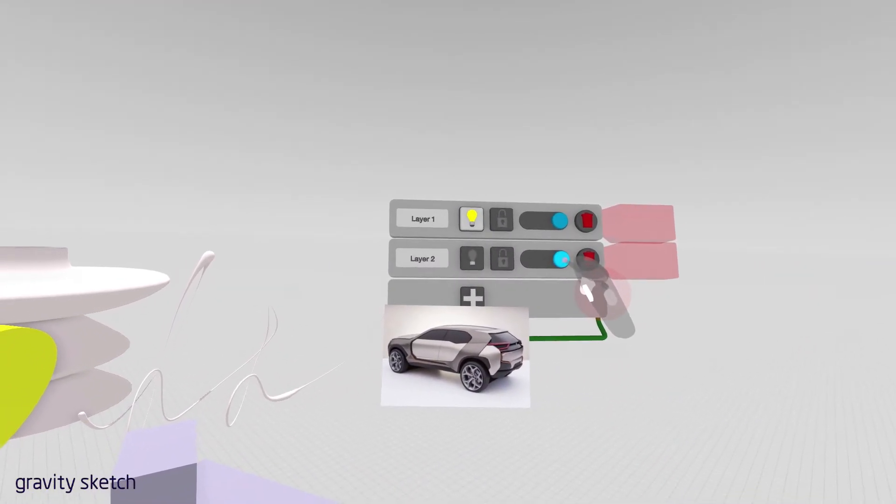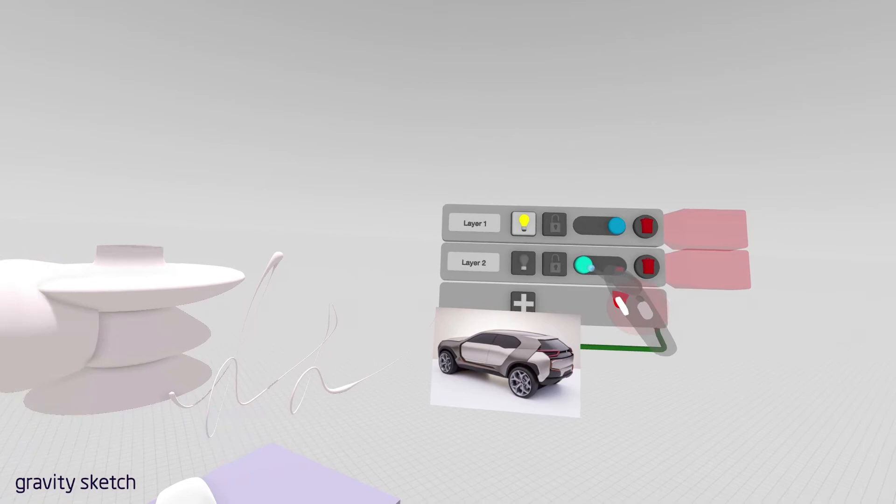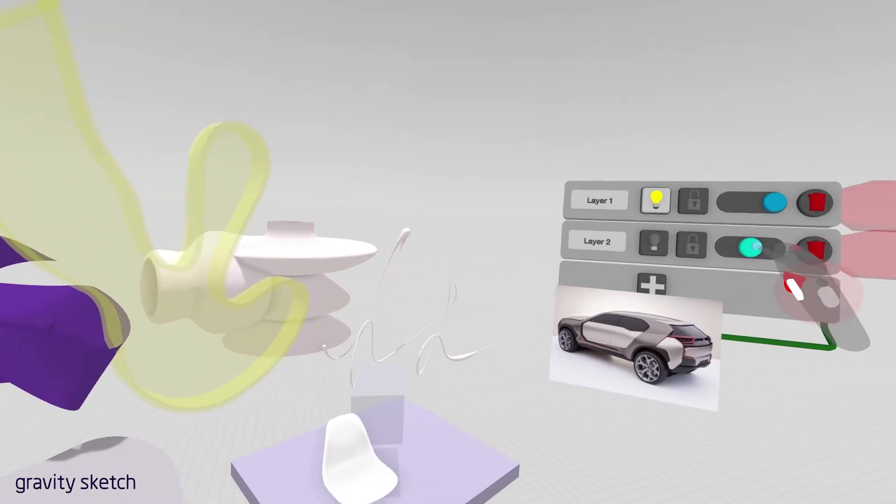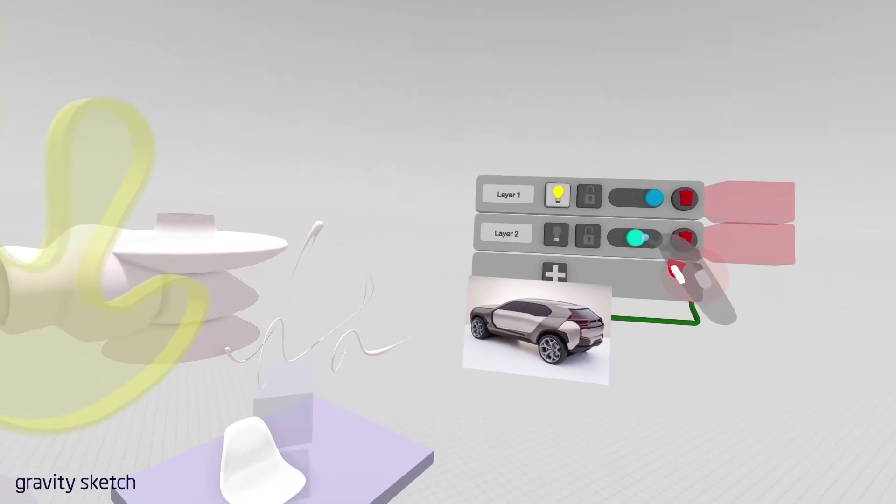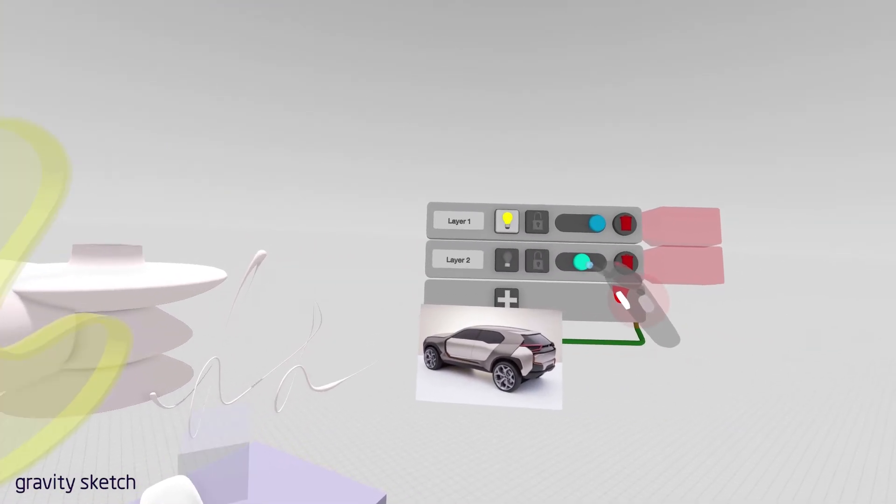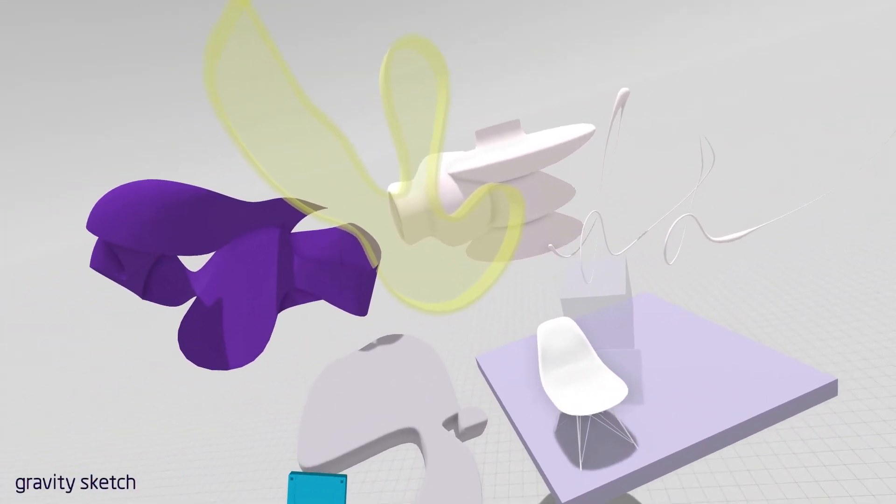So the toggle here on this layer allows you to change its visibility. So we can turn things all the way off. We can make them transparent. Or we can make them fully opaque. So for this exercise we'll make them transparent.